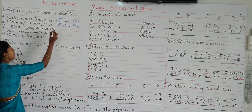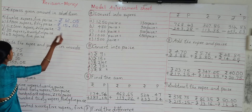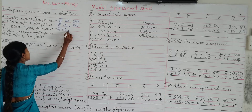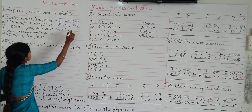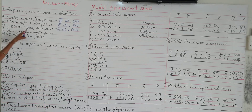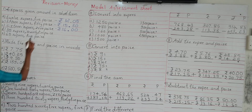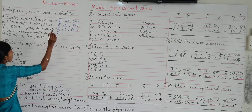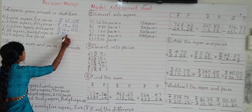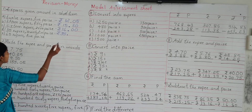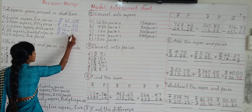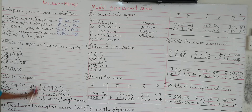Next: 16 rupees 05 paisa. Write the rupee symbol, then 16. Insert the dot. How many paisa? 05 paisa. So 16 rupees 05 paisa in short form is ₹16.05. Now look at the fourth example: 35 rupees 05 paisa. Write down the rupee symbol, then 35 rupees. Insert the dot. So we have expressed the amount in short form.